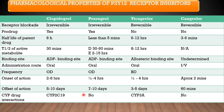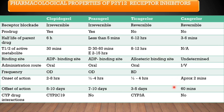Ticagrelor is a reversible inhibitor with no prodrug; parent drug half-life six to twelve hours, elimination half-life eight to twelve hours, allosteric binding site, administered orally twice daily, onset 30 minutes to four hours, offset three to five days, with CYP drug interactions. Cangrelor is also a reversible receptor inhibitor with no prodrug as it is given intravenously; parent drug half-life three to six minutes, administered as a continuous intravenous infusion, onset approximately two minutes, offset 60 minutes, and no cytochrome P450 drug interactions.